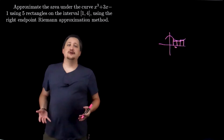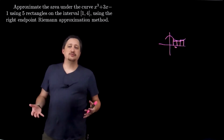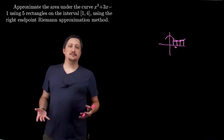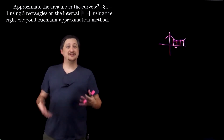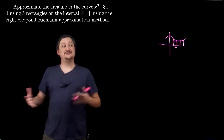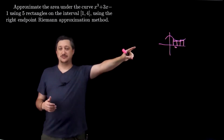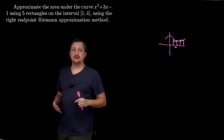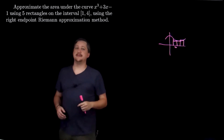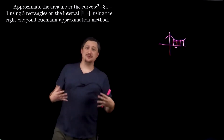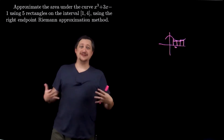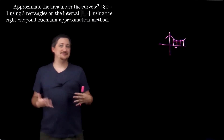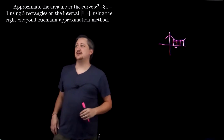All Riemann approximations are fundamentally the same except for the height value you need to choose. That's why all the formulas look annoyingly similar to the point that they're really easy to mix up if you just memorize them.